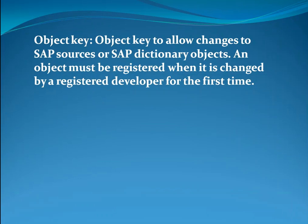What is an object key? An object key is used to allow changes to SAP sources or SAP dictionary objects. An object must be registered when it is changed by a registered developer for the first time.